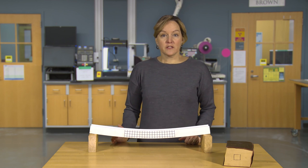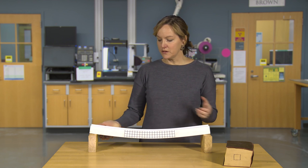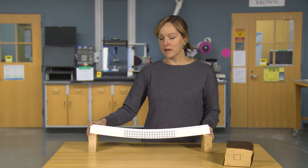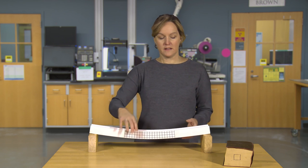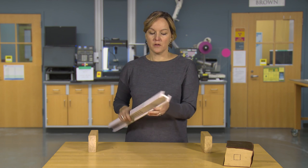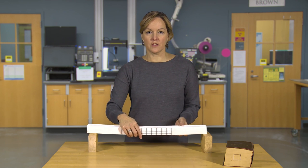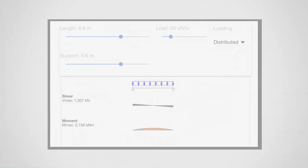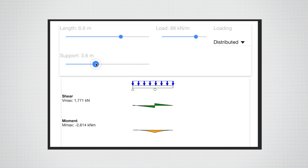So what factors do you think will affect the moment and shear in a beam? Is it the connections, the length, how much load is applied, the shape, or the material? For example, this beam is made of plastic — would it be stronger in steel? Experiment with the beam simulator and see what factors you think affect the shear and moment in a beam.